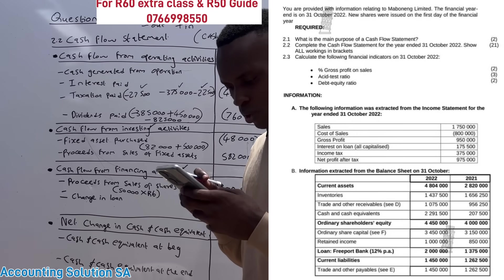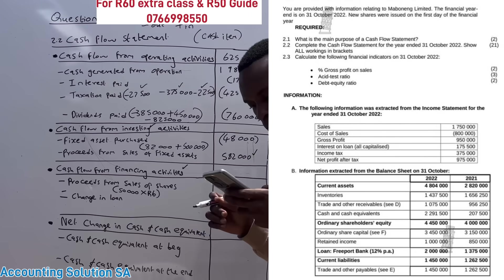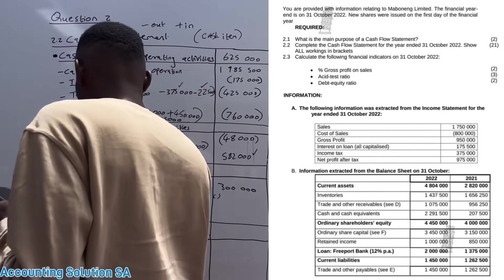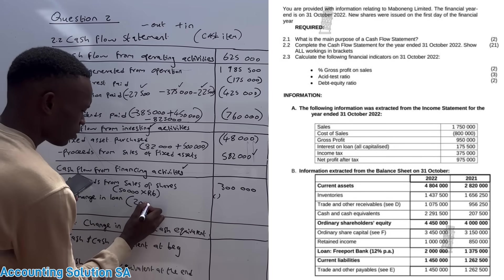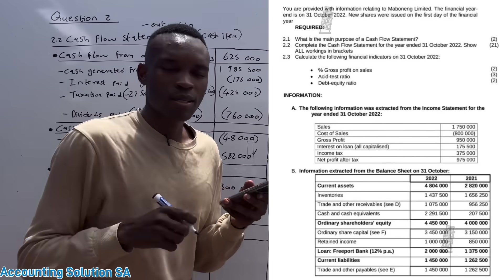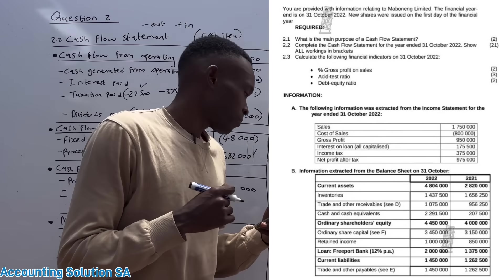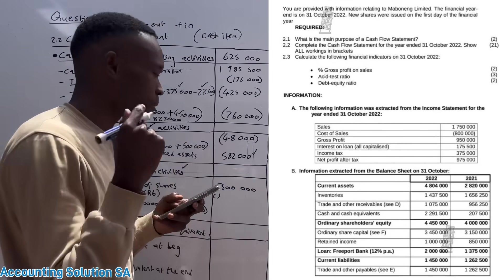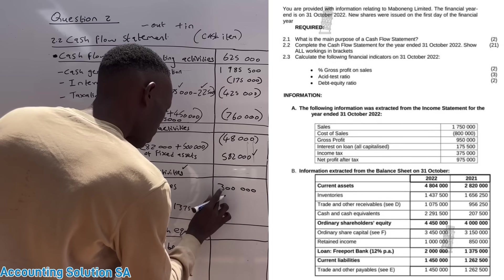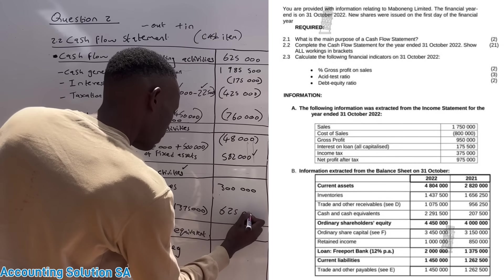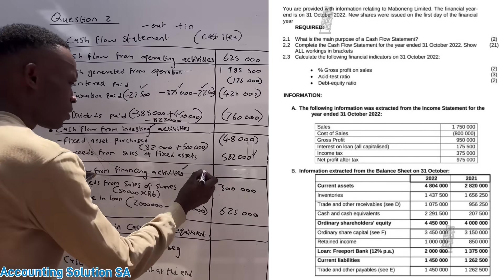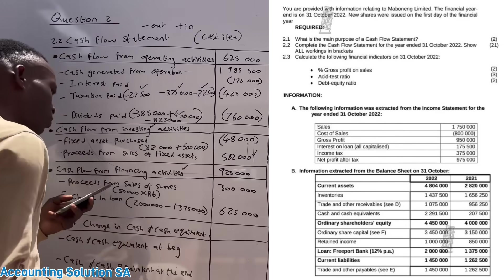Now let's check the change in loan to determine whether it is outflow or inflow. Under the balance sheet, the loan balance in 2021 was 1,375,000 and in 2022 it is 2,000,000. We get the difference: 2,000,000 minus 1,375,000. Our loan has increased, meaning we went to the bank and borrowed again, so it is inflow because we received money from the bank. The difference is 625,000 inflow.